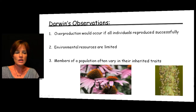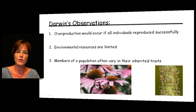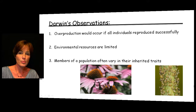Darwin's second point was that environmental resources are limited. This goes right along with the first point — we would just have too many individuals if everyone survived. So if we have limited environmental resources, there has to be some way to basically balance out this overproduction against those limited environmental resources.